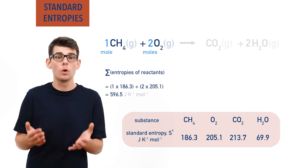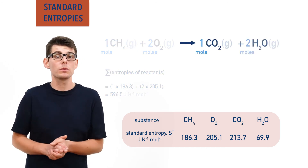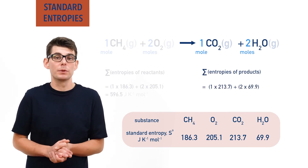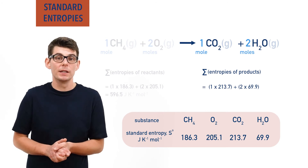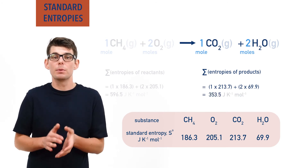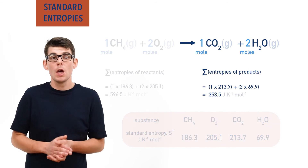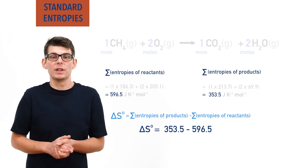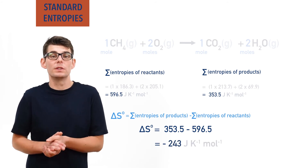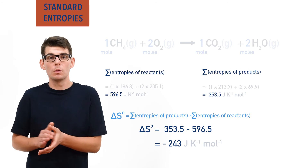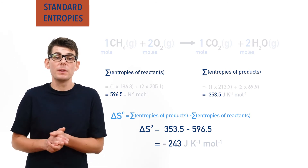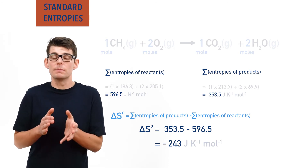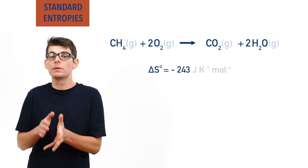For the products, one mole of carbon dioxide forms but two moles of water form, meaning the sum of entropies for products would be one times 213.7 plus two times 69.9, giving 353.5 joules per Kelvin per mole. Overall entropy change would be 353.5 minus 596.5, giving minus 243 joules per Kelvin per mole. This shows us that for the combustion of methane under standard conditions, the entropy change for the reaction system is minus 243 joules per Kelvin per mole.